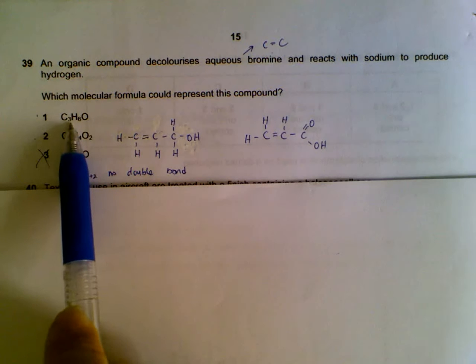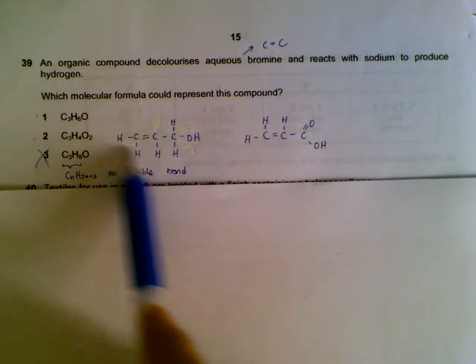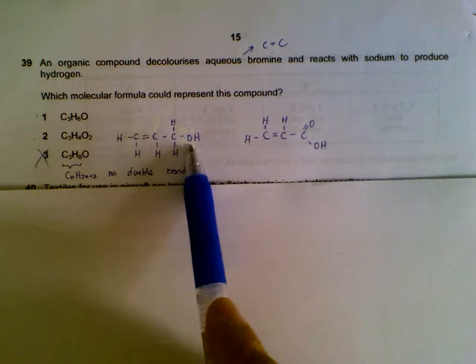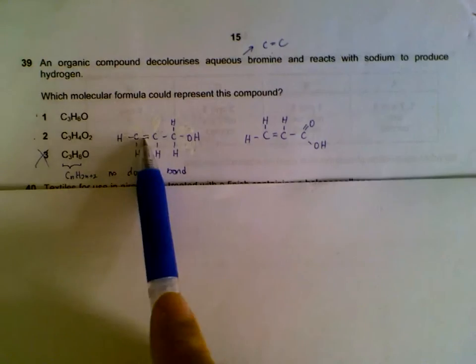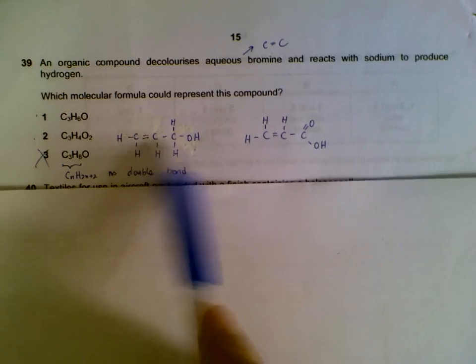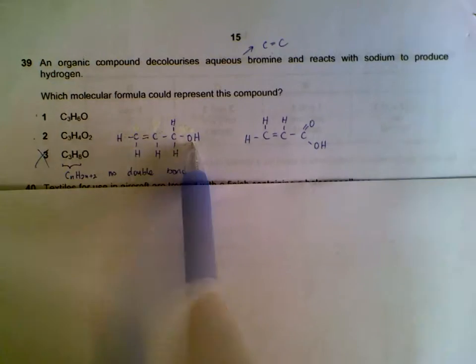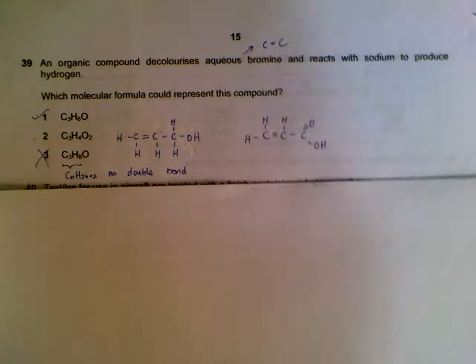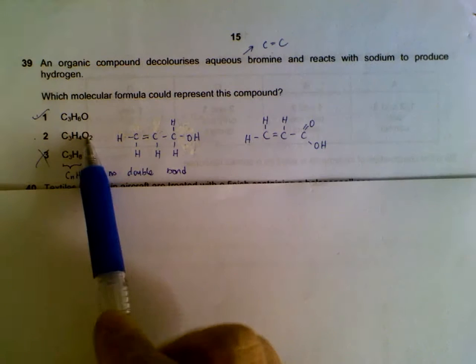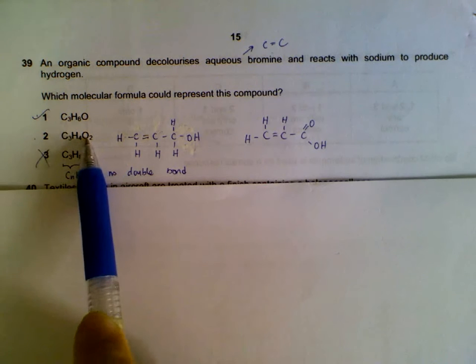And we can check. For C3H6O, we can actually draw them. There's an alcohol group and there's a double bond here. So this one will decolorize bromine, and your OH will react with sodium. So this is possible. We have two oxygen. It could be two alcohol groups, or it could be one acidic group. So we will draw. We have three carbons.